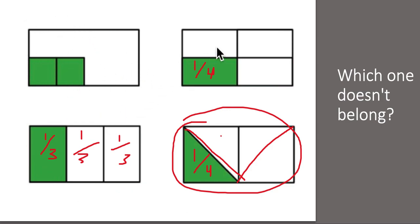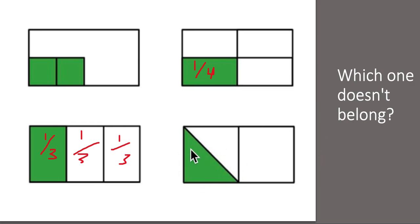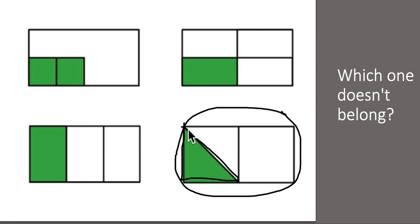I do see another one that does not belong. I feel as if this example down here does not belong. And why I say that? Because the part that is shaded, what shape is that? This is a triangle. A triangle has three sides.